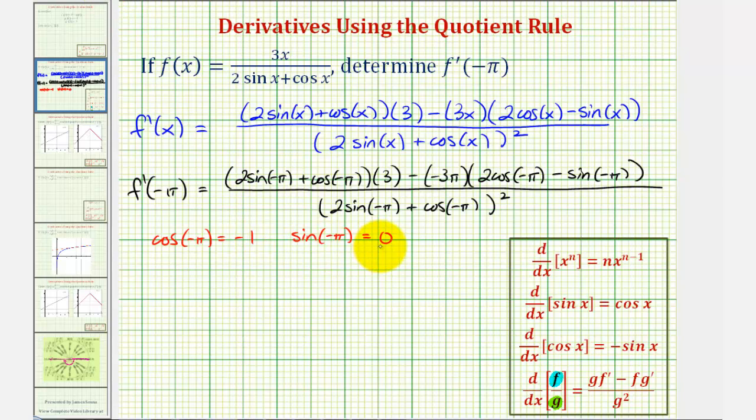Since sine negative pi equals zero, let's go ahead and simplify this. This would be zero, this would be zero, and this would be zero. And now we'll substitute negative one for cosine negative pi.